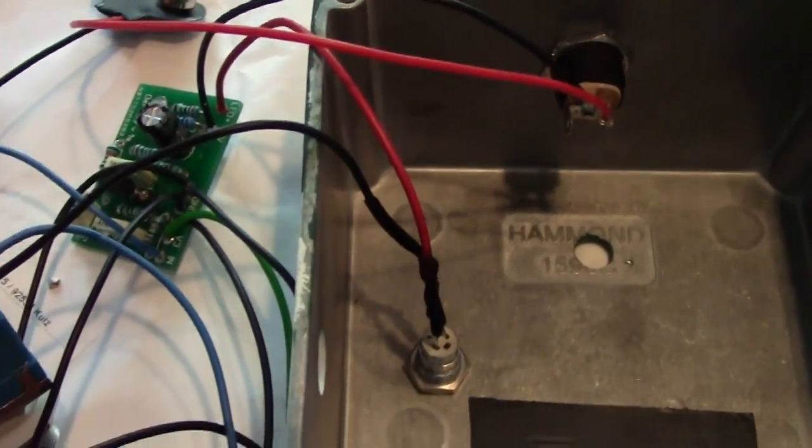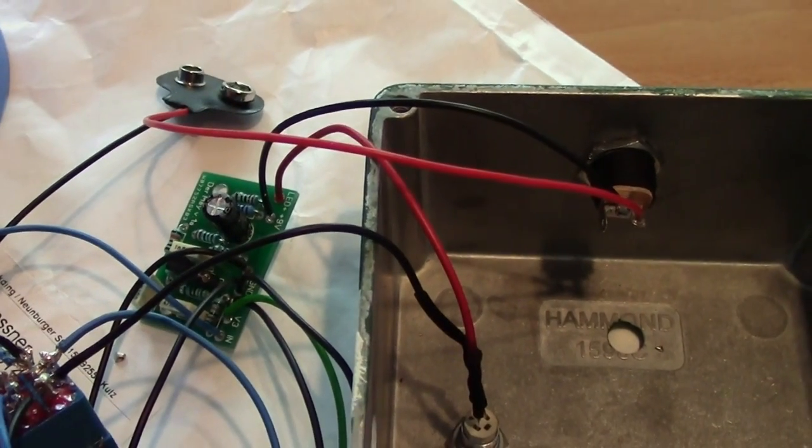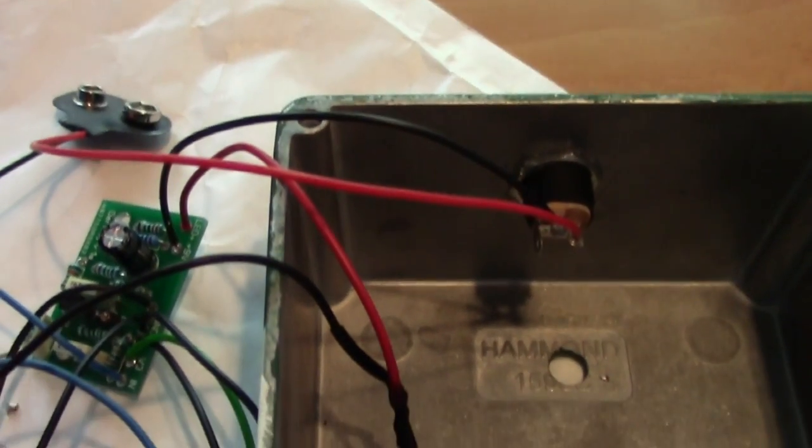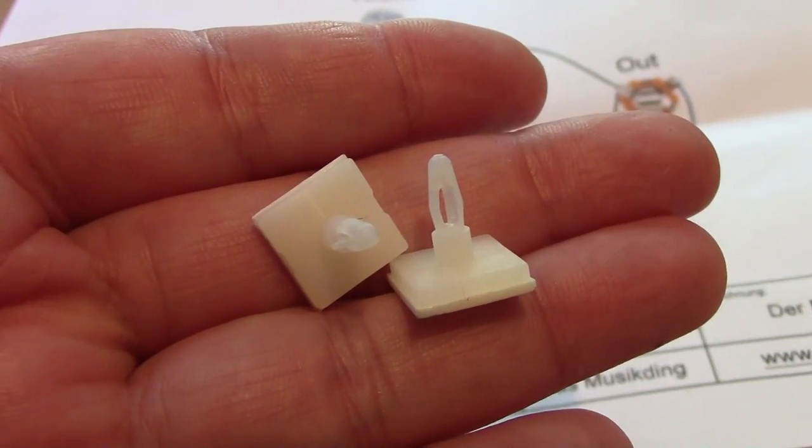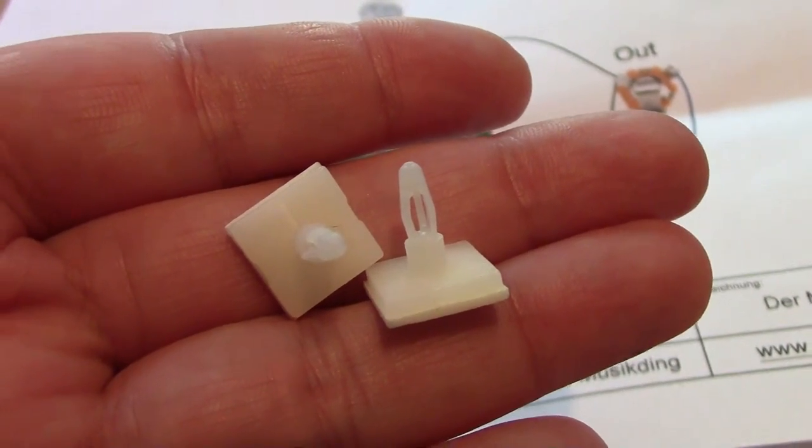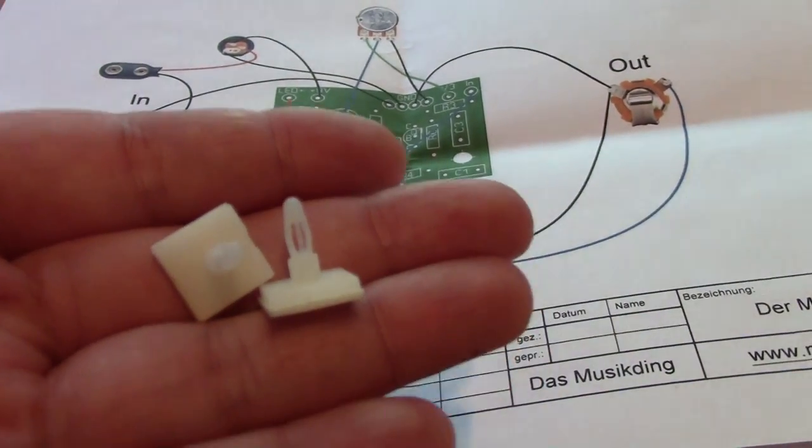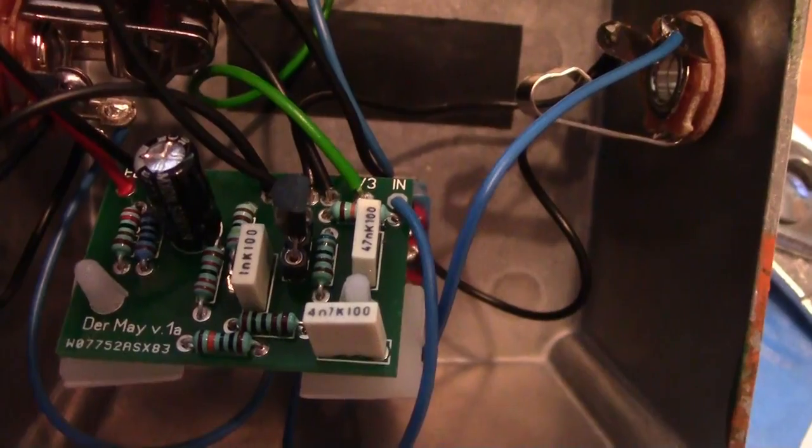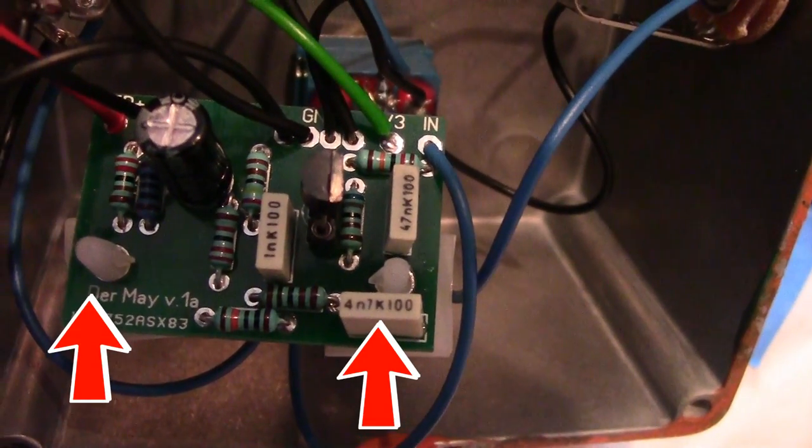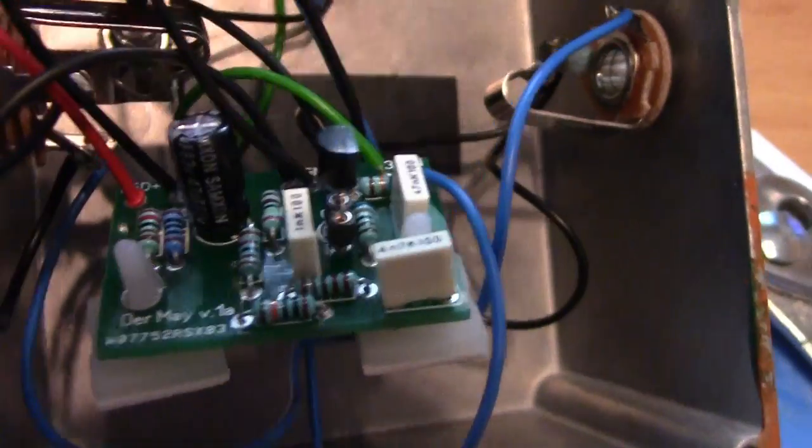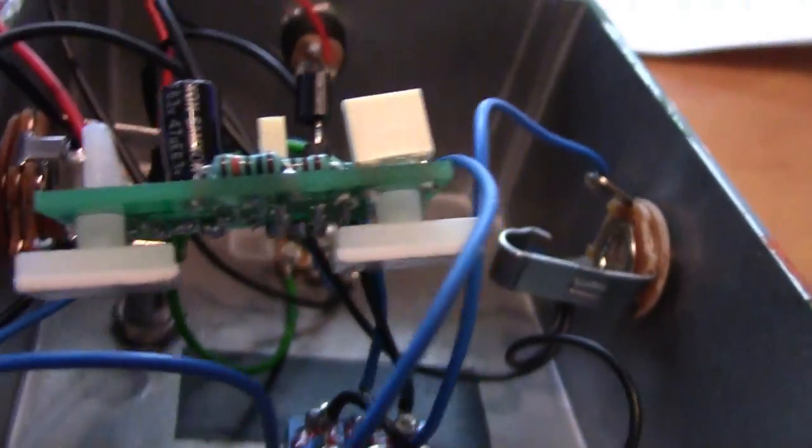Now you should have everything connected. The next step is to place the entire assembly into the enclosure. The circuit board is held in the enclosure by a pair of adhesive fasteners. Insert one fastener into each of the holes of the circuit board and stick it in. You may also want to place a piece of electrical tape on the enclosure for insulation.